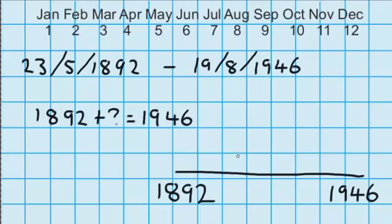Now to help me answer this question, I'm going to jump up to a tidy number and I can see that 1900 is pretty close to that. So to jump from 1892 to 1900 is a jump of 8.